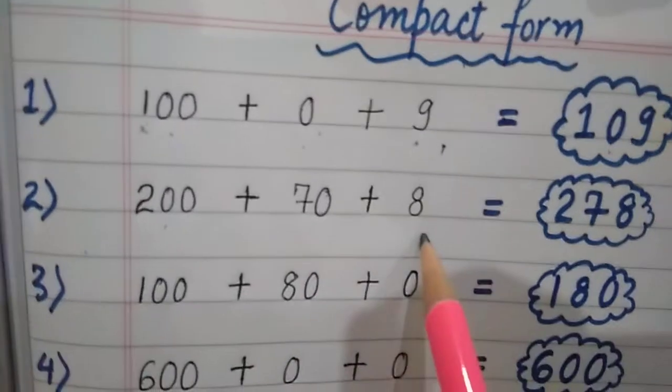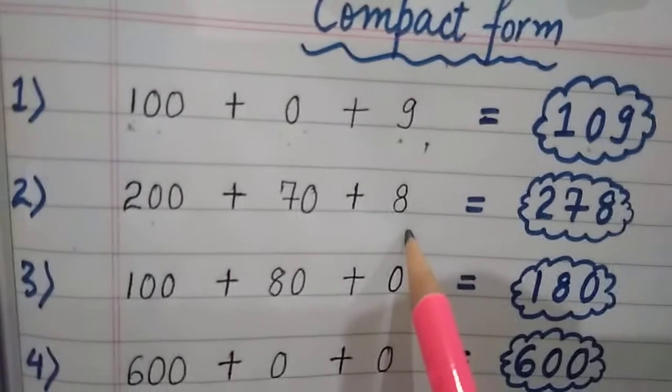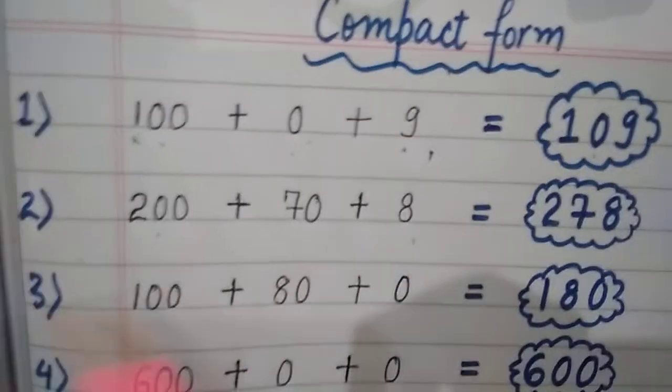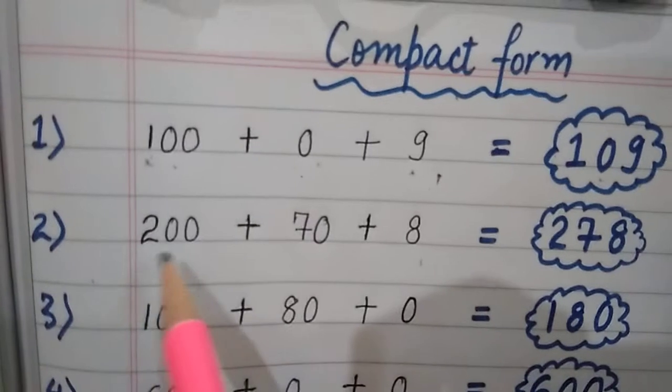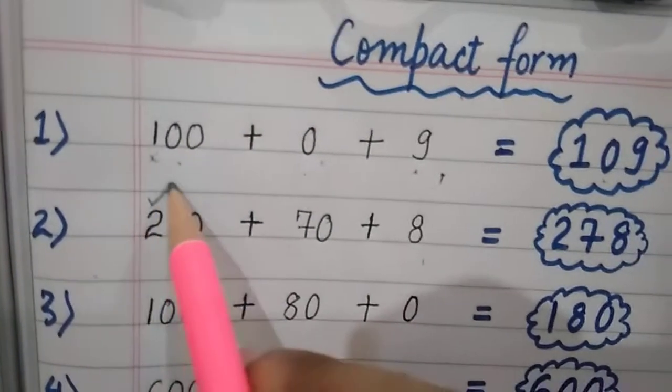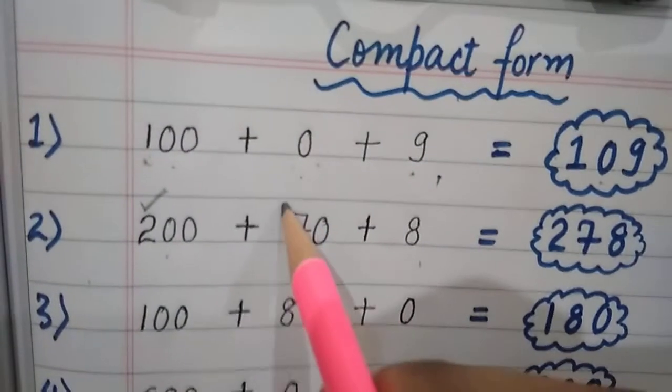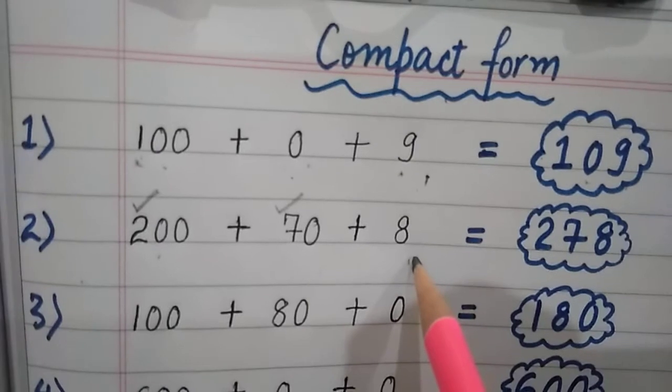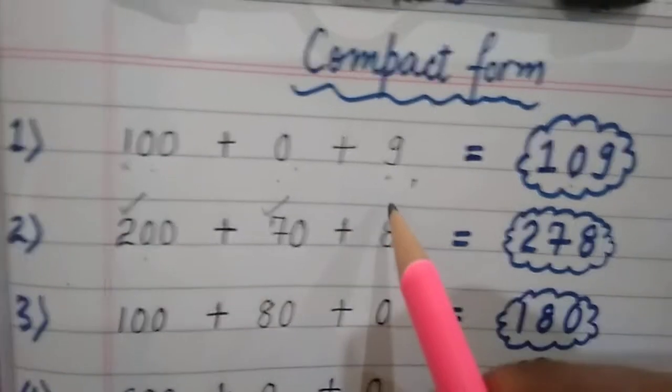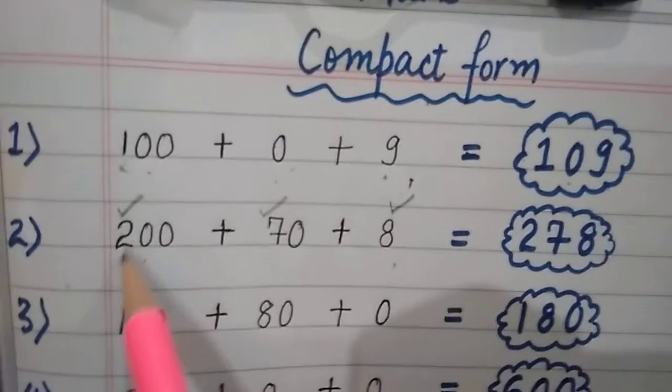200 plus 70 plus 8. You have to pick only the first digit. So the first digit is 2. The second digit is 7. The third digit is 8. So 278.